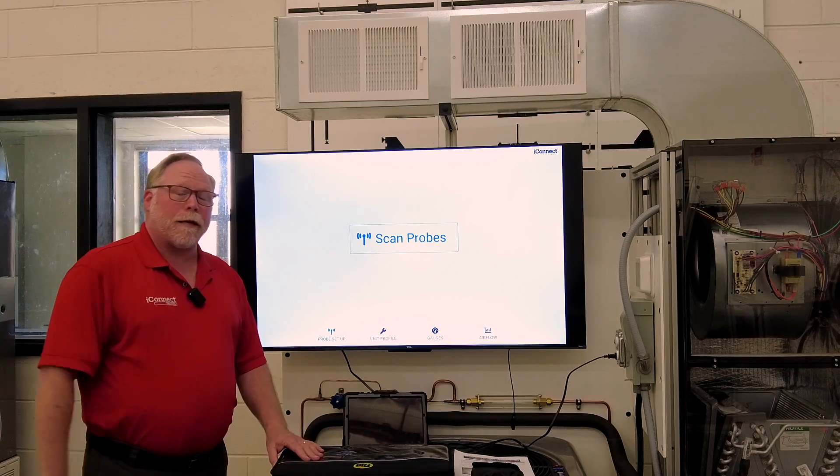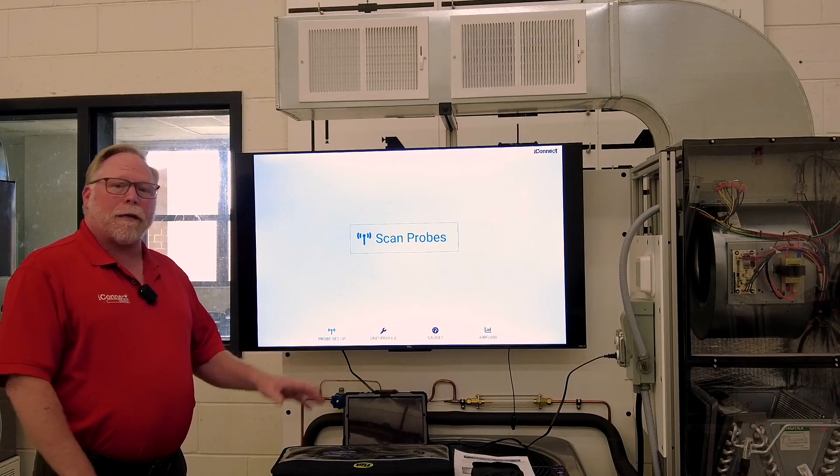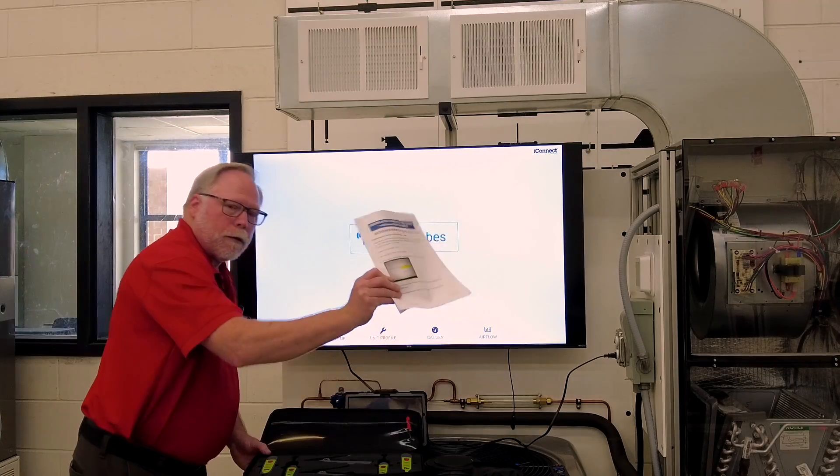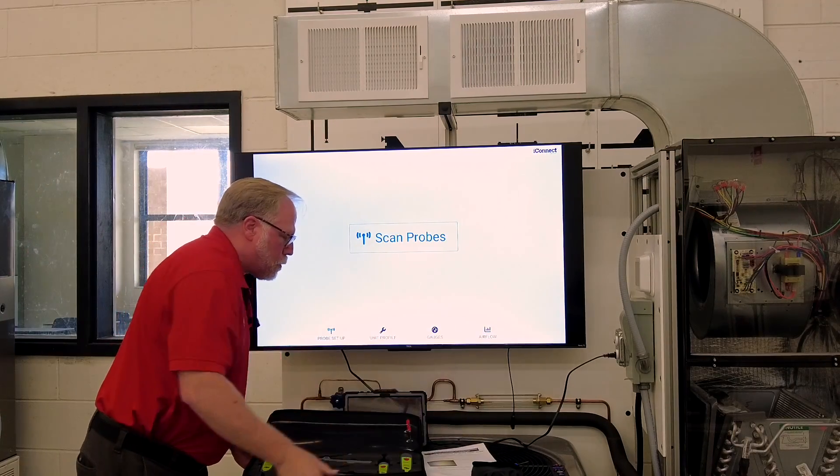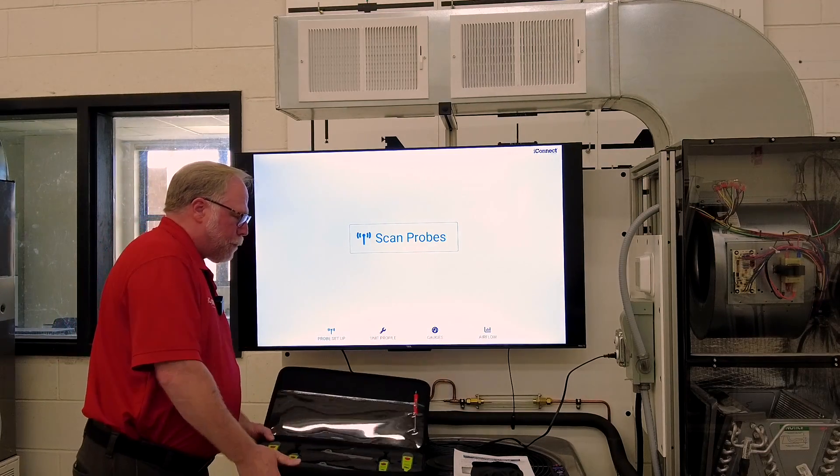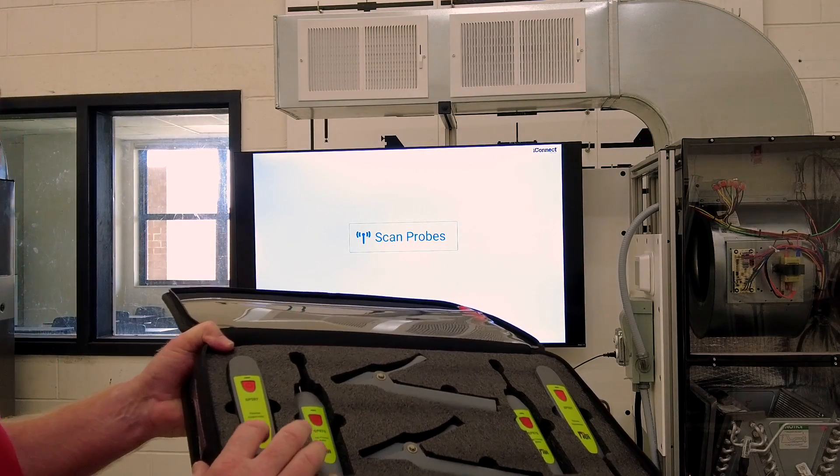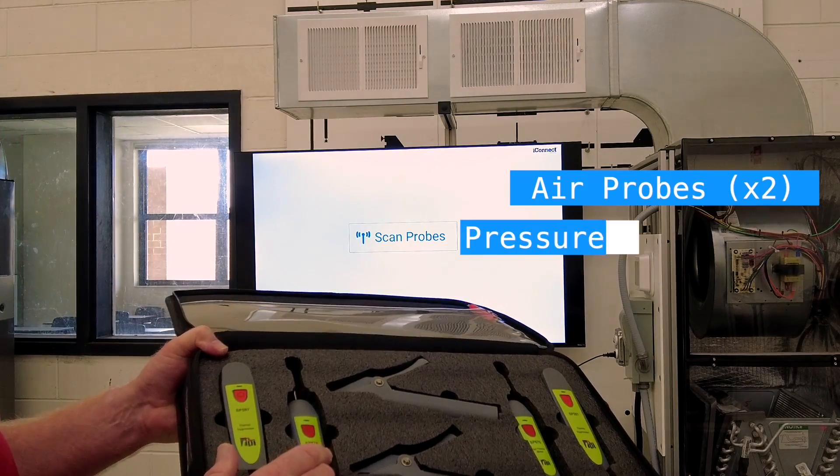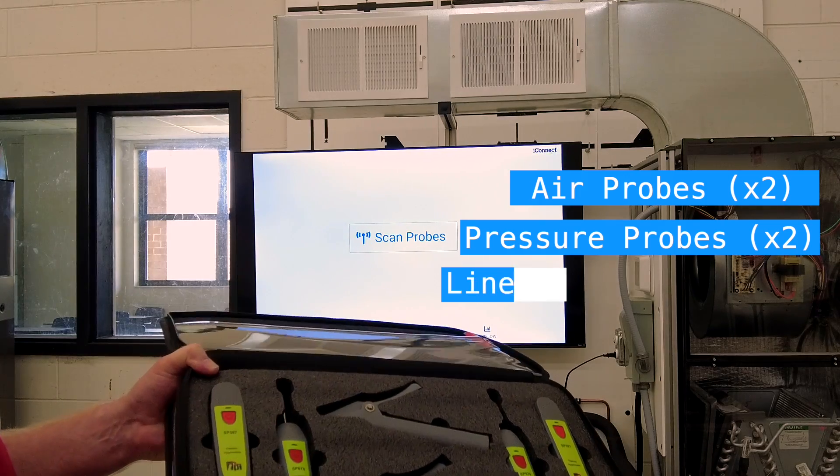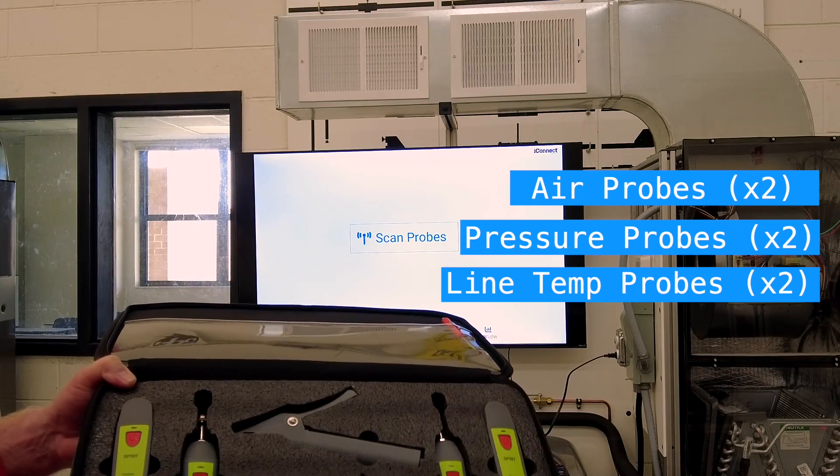Okay, great. Here we are now. We're ready to hook up our probes to the tablet and show up on the screens. Your quick start guide walks you through this as well. Let's get your kit out. And in the kit, you're going to have all of your devices. Now you have your air probes, you got your pressure probes, and you got your two line temp probes. And then you've got over here, same thing, you got your pressure and your temperature.